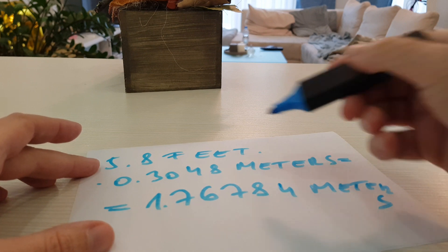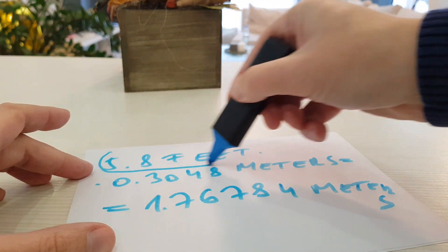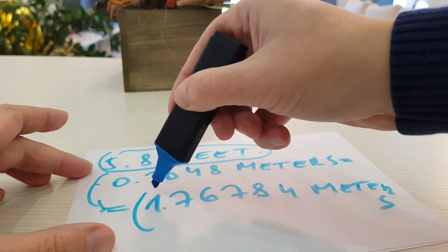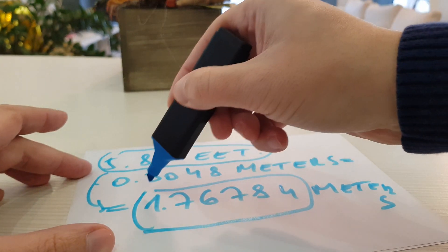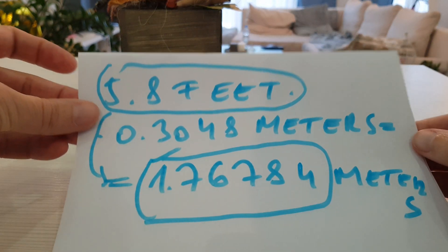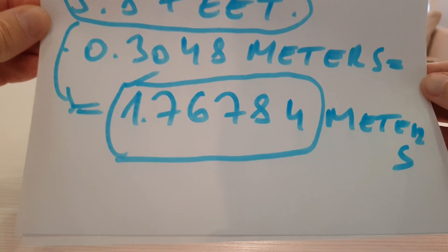Here is the solution. Again, 5.8 feet equals 1.76784 meters.